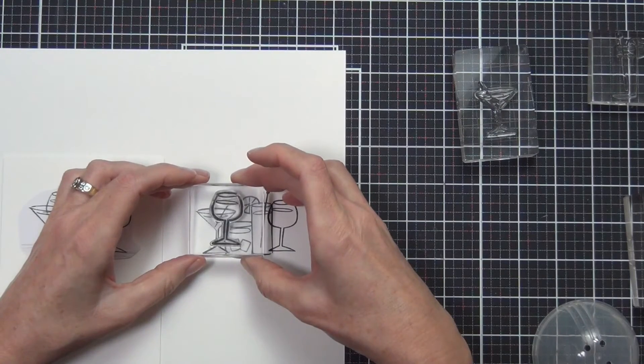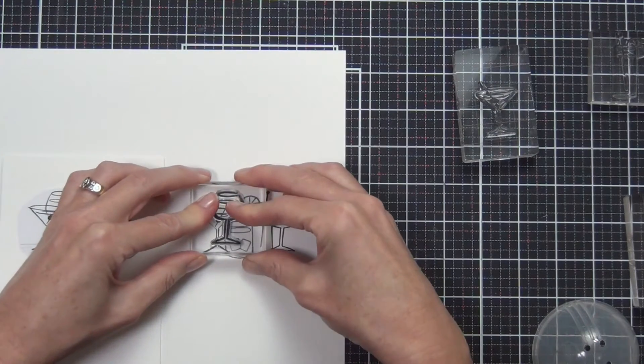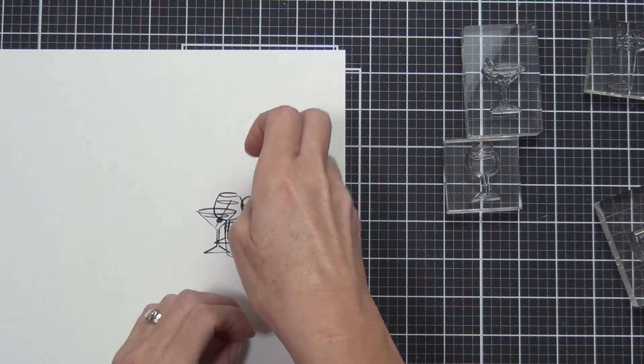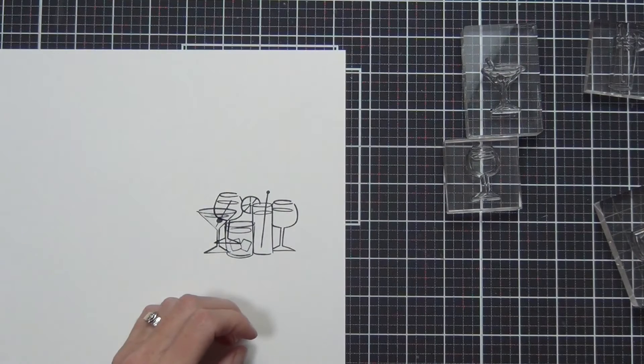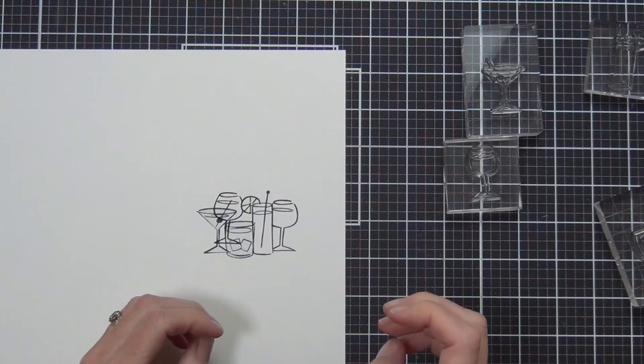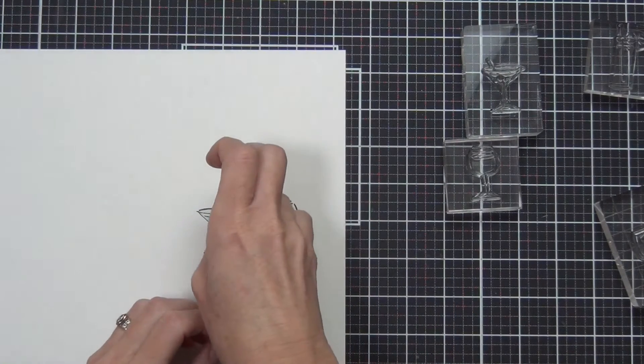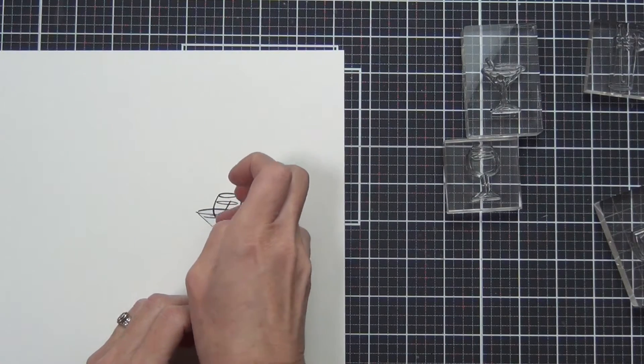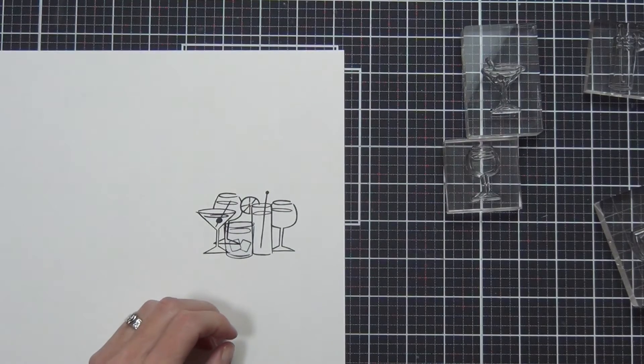I'm working on a piece of Neenah cardstock, 80 pound, and I roughly knew I wanted it in the center of a card. I don't like to see my Copic markers color through the inside of my card, so I find it's easier to work on a separate piece of cardstock.